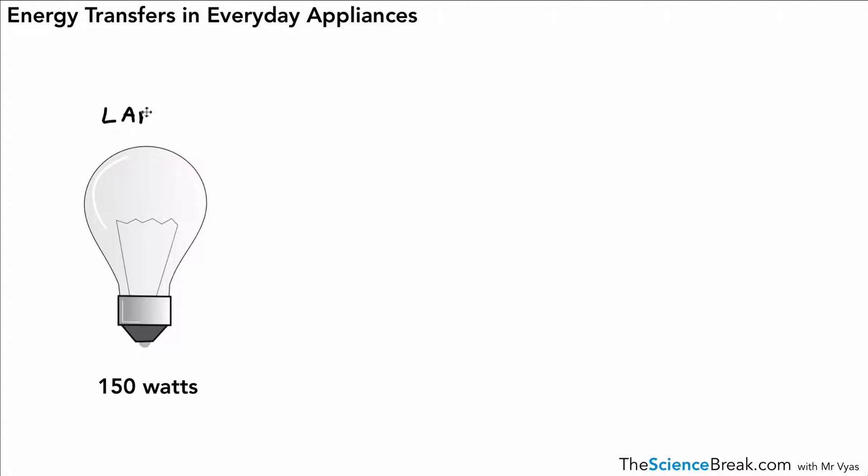Hello and welcome. Today we're looking at energy transfers in everyday appliances and here we have a lamp in front of us. This lamp has a power rating of 150 watts. What does that mean to say a lamp has a power rating of 150 watts? Well, it means that 150 joules of energy are transferred per second.